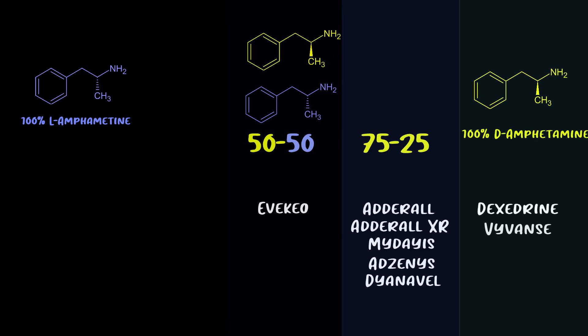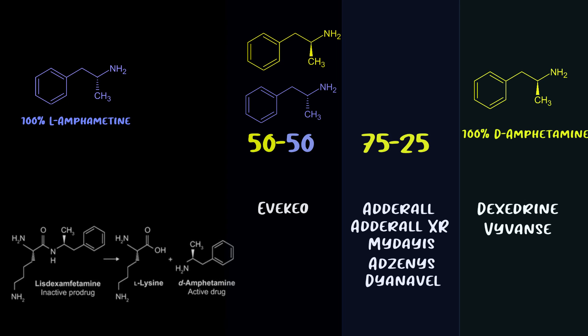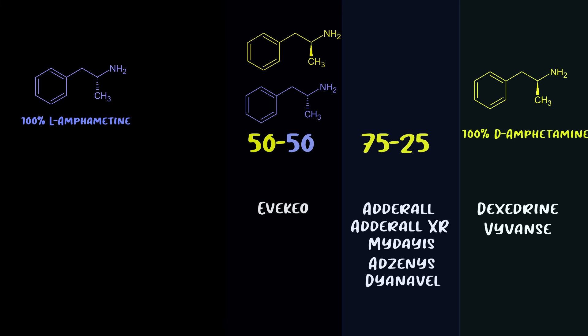Moving on to Vyvanse, which you do actually see being used. The generic name is lisdexamfetamine, and it has an FDA approval for binge eating disorder. Essentially it's dexedrine with a lysine group attached, making it inactive — the lysine has to be cleaved off for it to become active. This lysine snipping occurs via hydrolysis in red blood cells, creating a bottleneck for bioactivation, which allows for a smoother effect curve and makes the drug very hard to abuse.